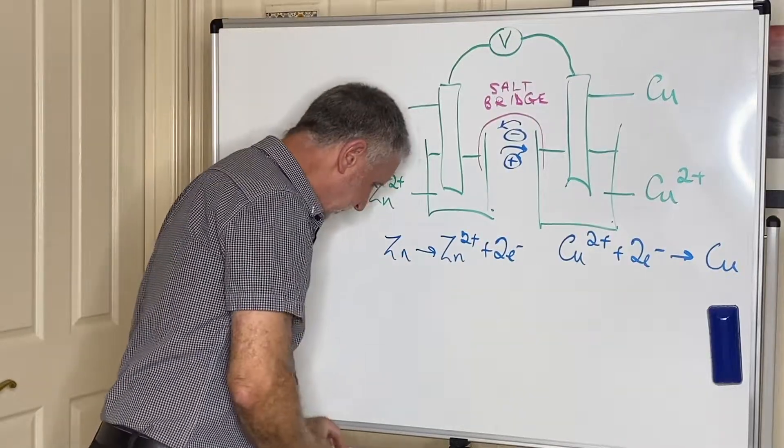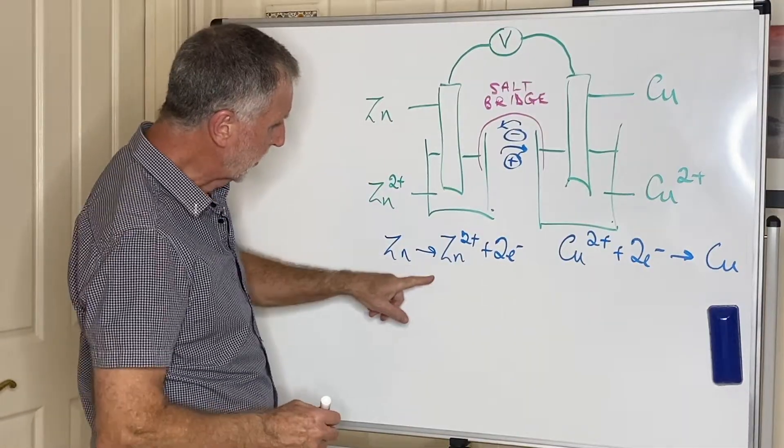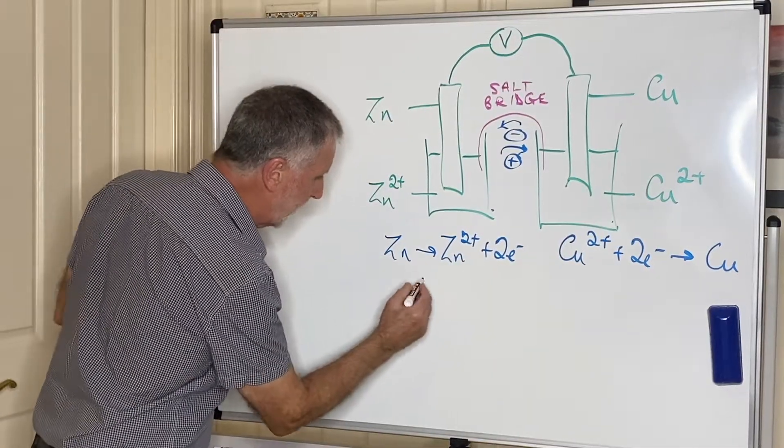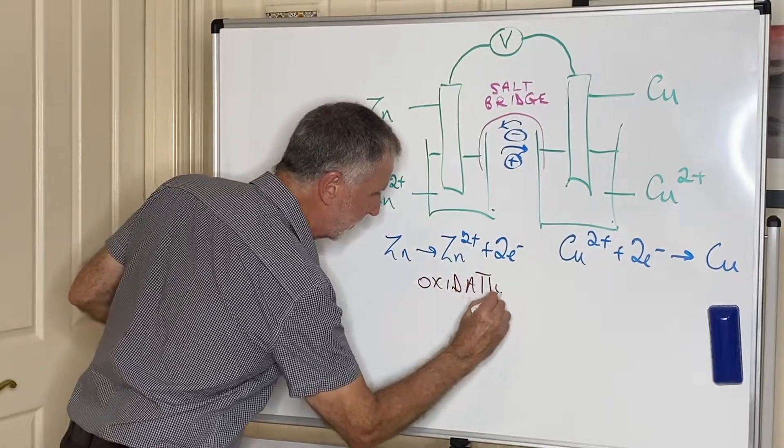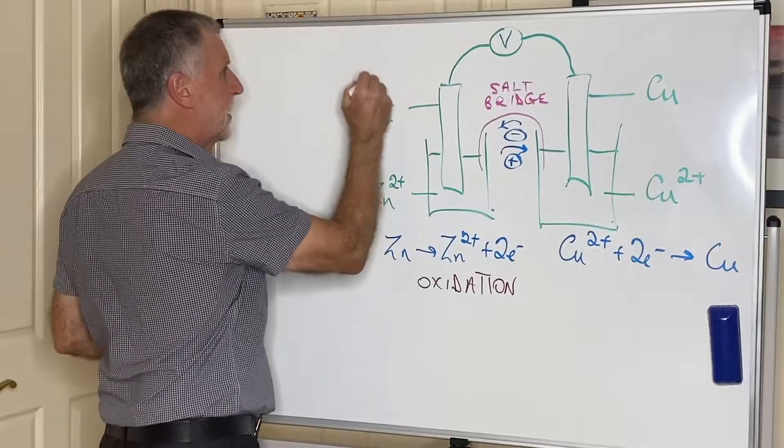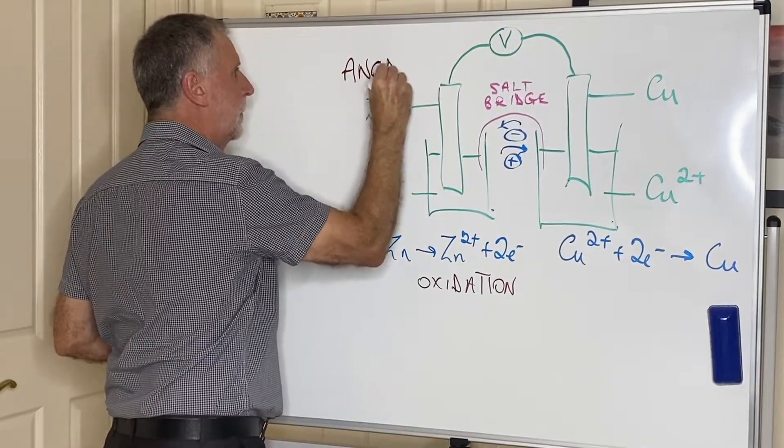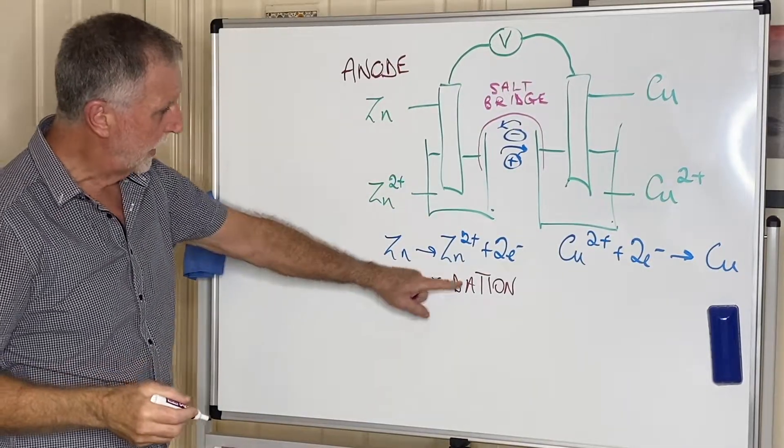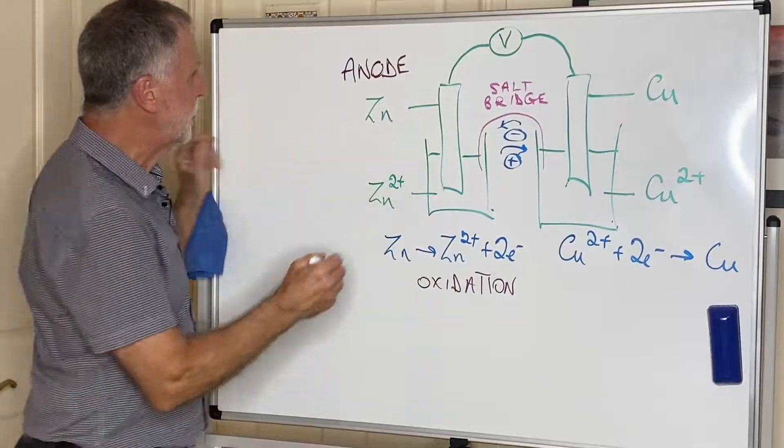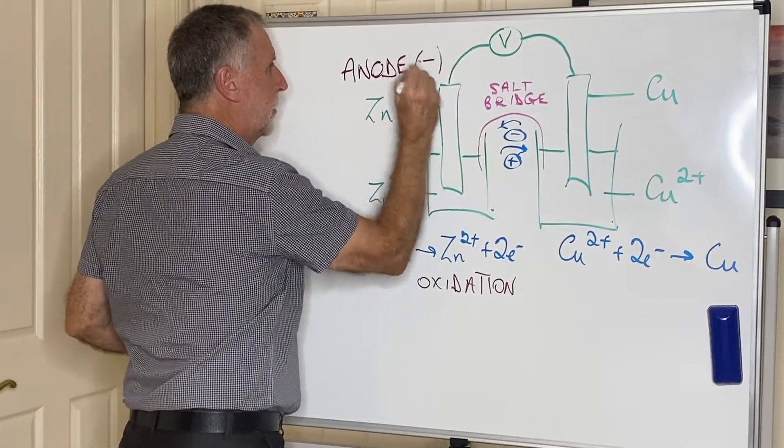Some terms that you need to know: the zinc electrode, the one that gives up the electrons, the one where oxidation takes place. This is very important—this is oxidation. This is called the anode. So the anode is where oxidation takes place, and since electrons have been produced there, it will carry a negative charge.